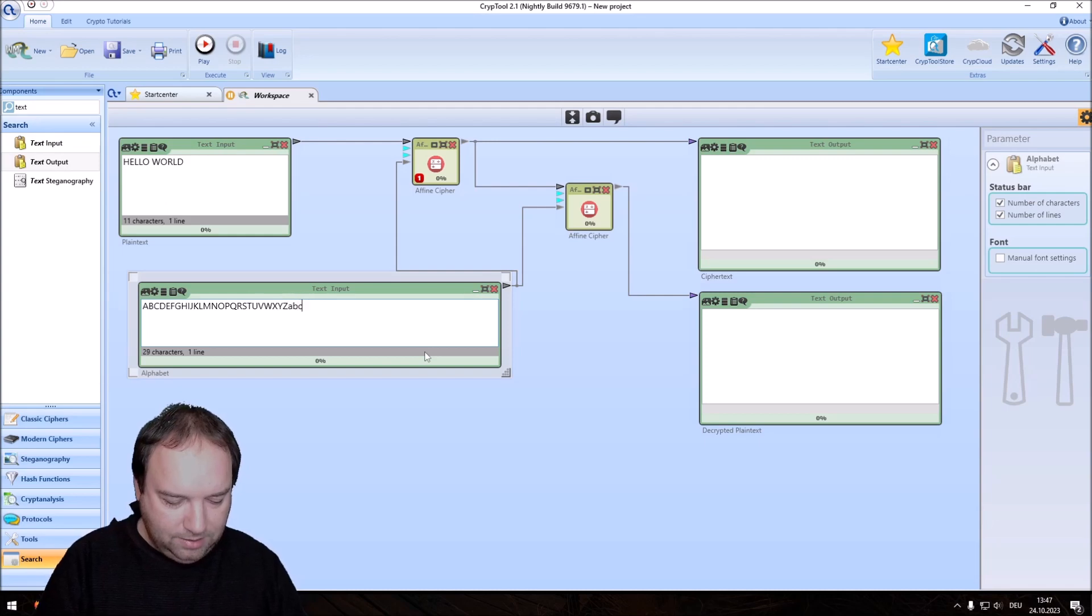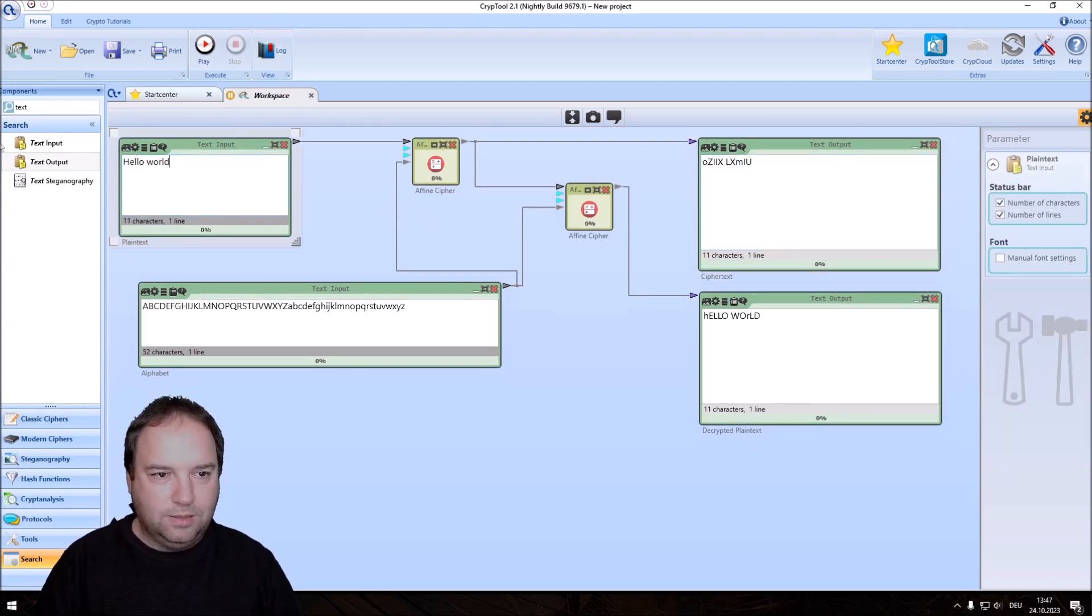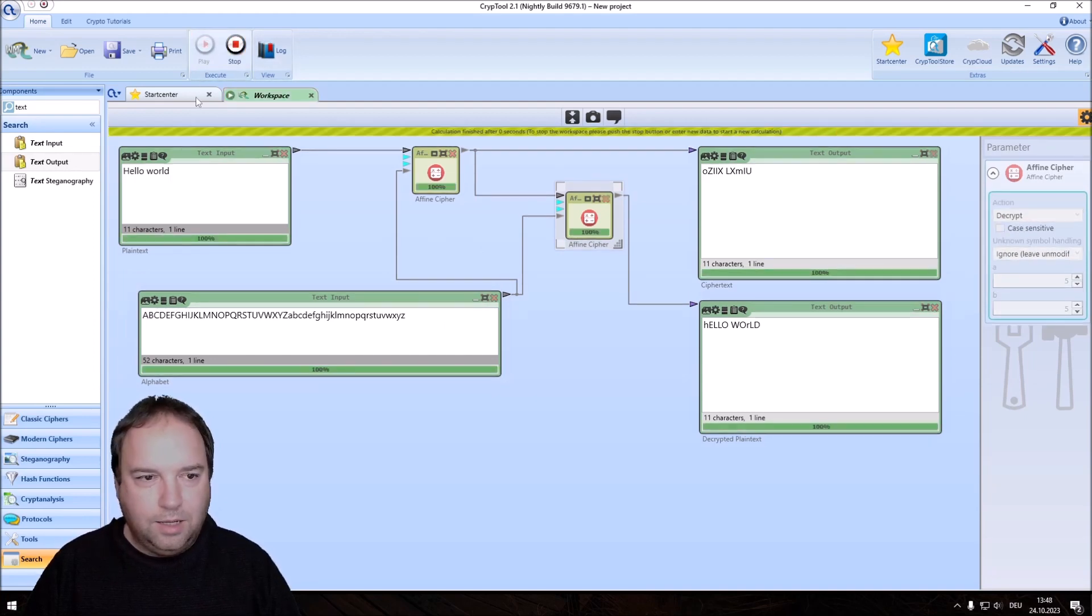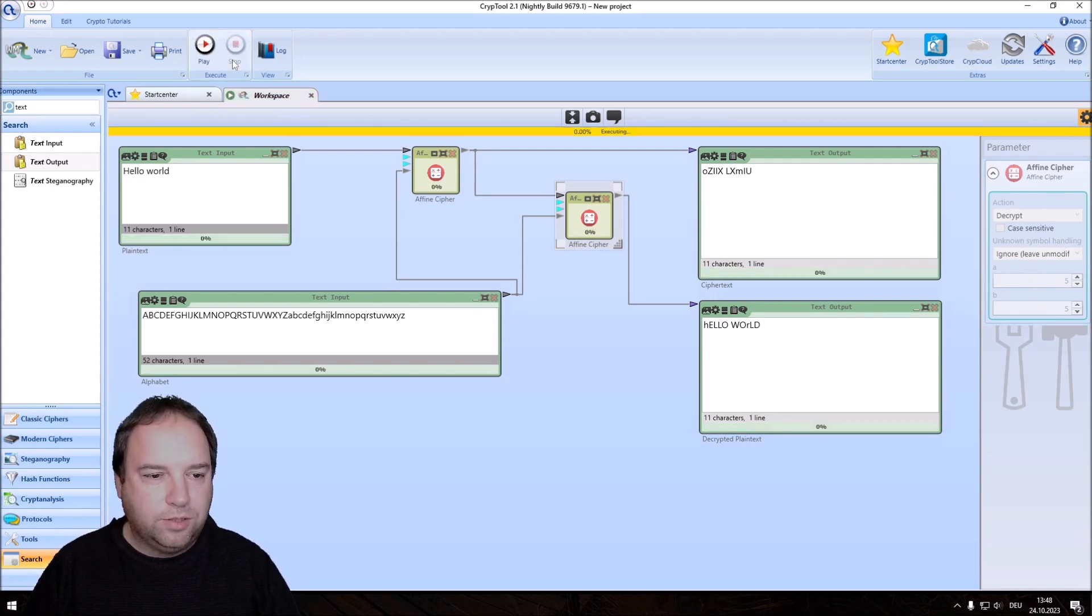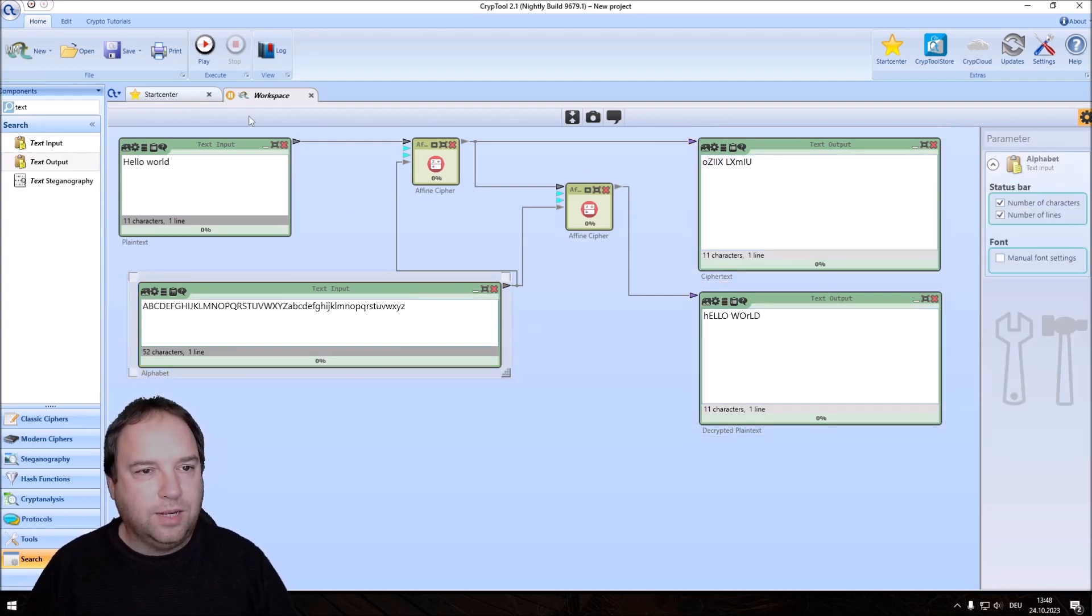But we can also add here additional alphabet letters. Let's add, for instance, lowercase. And now, when we start it again, you can see that we also have here lowercase letters in our alphabets. And we can now encrypt hello world lowercase. So we have decrypt and encrypt. a5 b5 and a5 and b5.